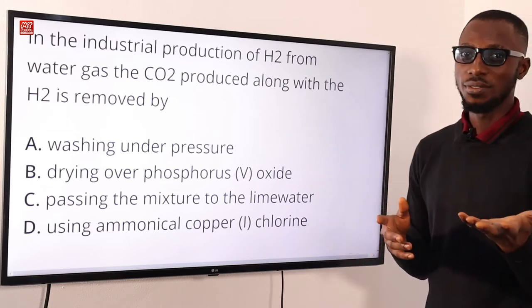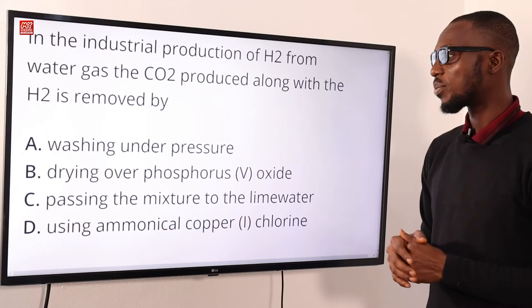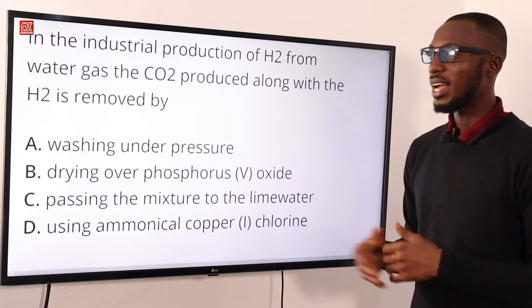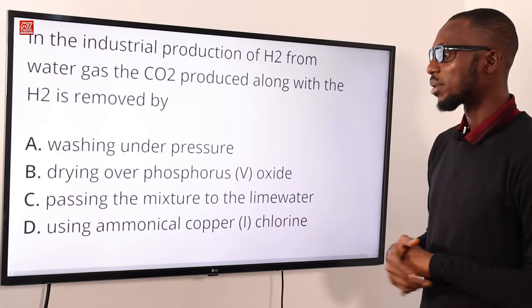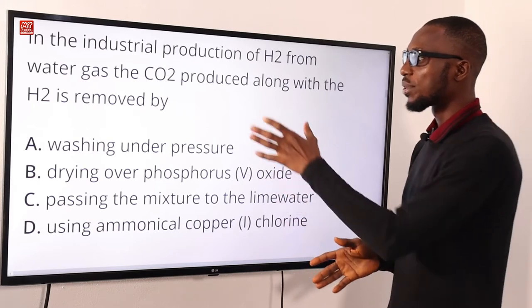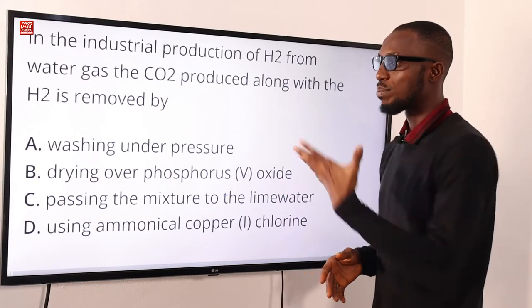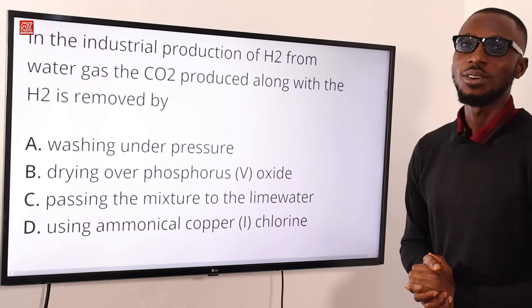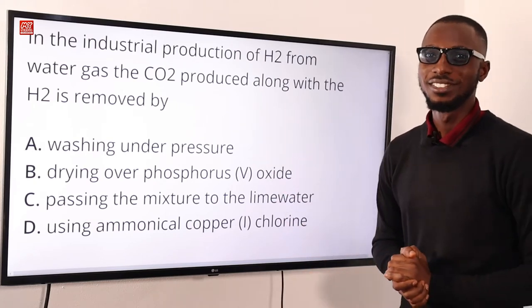Washing under pressure means dissolving it in water at 30 atmospheres. The correct option here is option A. The process described is the Bosch process, so option A is the correct option.